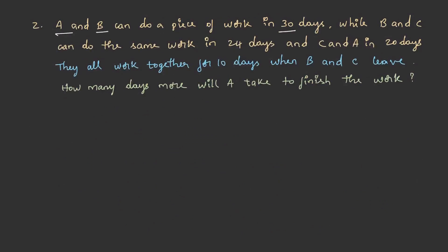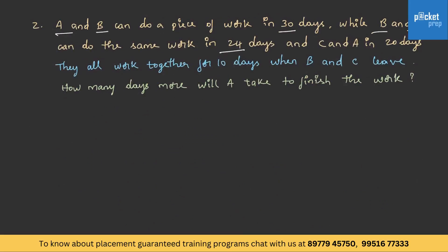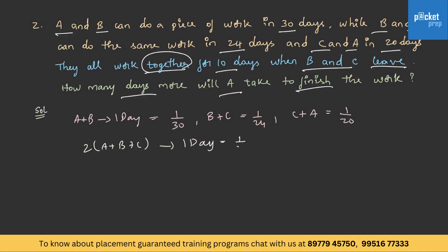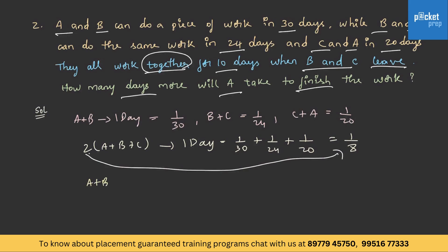A and B can do a piece of work in 30 days, B and C in 24 days, and C and A in 20 days. They all work together for 10 days, and when B and C leave, how many days more will A take to finish the work? A plus B's one day work is 1 by 30, B plus C is 1 by 24, C plus A is 1 by 20. Adding: 2 into A plus B plus C's one day work equals 1 by 30 plus 1 by 24 plus 1 by 20, which equals 1 by 8. Therefore A plus B plus C's one day work is 1 by 16.